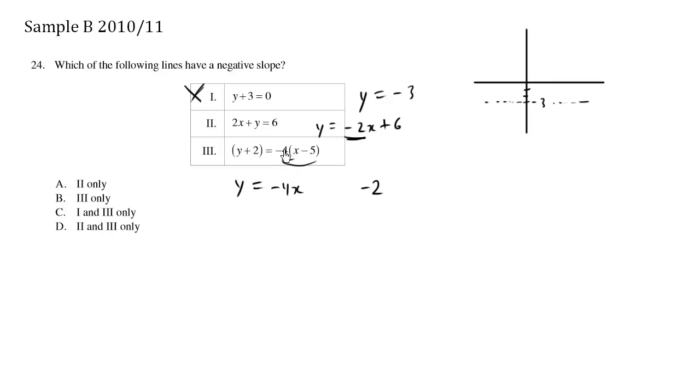Negative 4x. This here is going to be negative 4 times negative 5. It's going to be positive 20. So the overall result is y equals negative 4x plus 18. So the slope here is also negative.